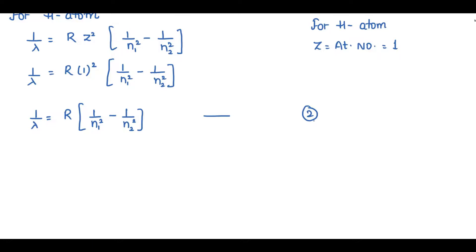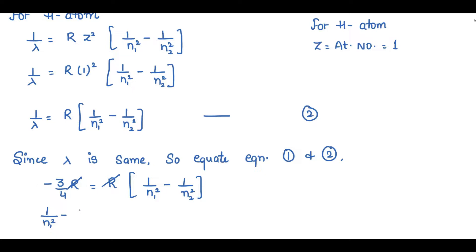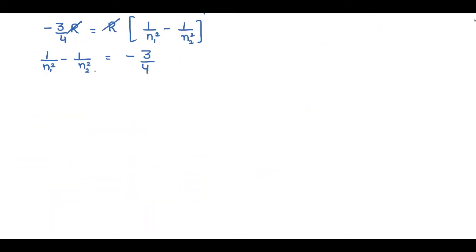Since the wavelength is the same for both spectra, we equate relation (1) and relation (2). Setting −3R/4 equal to R · (1/n1² − 1/n2²) and cancelling R from both sides, we get: 1/n1² − 1/n2² = −3/4. We will now apply the hit and trial method to find n1 and n2.